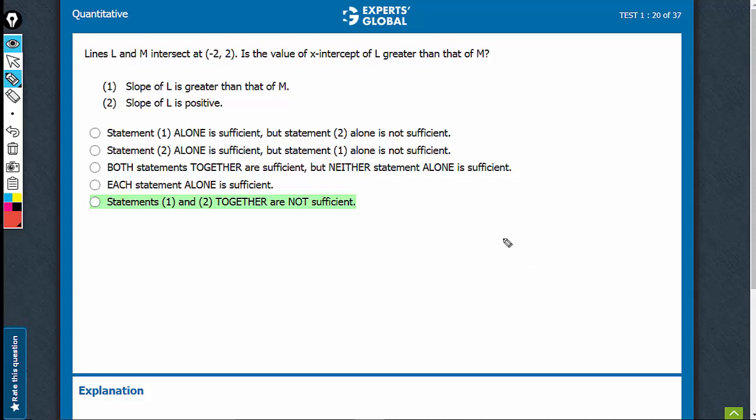Lines L and M intersect at somewhere here. Is the value of x-intercept of L greater than that of M? Okay.